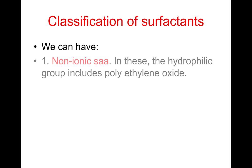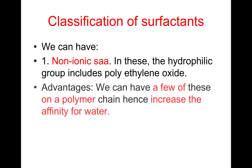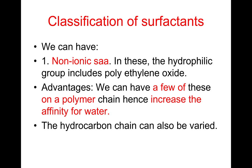Classification of surface active agents. There are four classes of surfactants. One, non-ionic surfactants. In these, the hydrophilic group includes polyethylene oxide. The advantages of these are we can have a few of these on a polymer chain, hence increase the affinity for the aqueous phase. The hydrocarbon chain can also be varied.